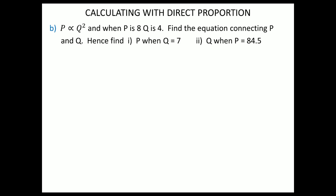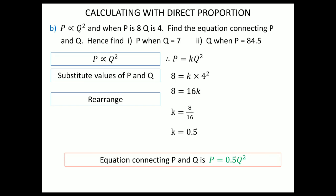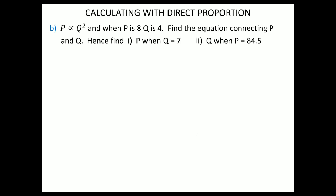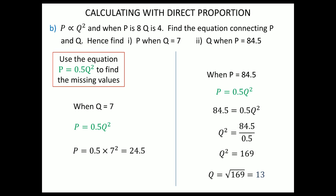Here's one to try yourself: p varies as q squared. When p is 8 and q is 4, find the equation connecting p and q, and hence find p when q equals 7, and q when p equals 84.5 — pause the video. Unpausing: k equals 0.5, so the general equation is p = 0.5q². When q is 7, p = 24.5. When p = 84.5, q = 13.